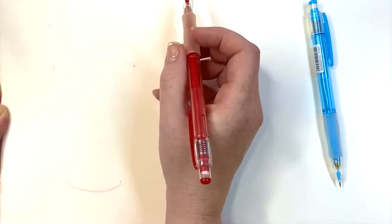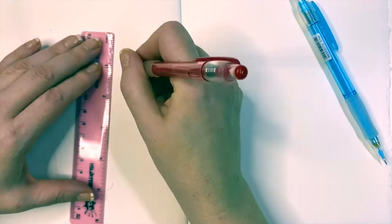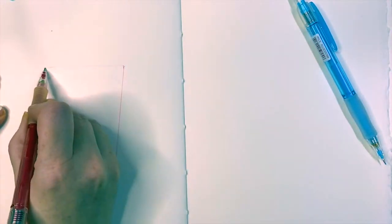Then I'm going to grab myself a ruler and just really darken and define those lines so I have something nice to paint against that's straight.